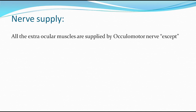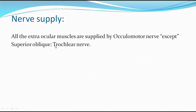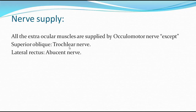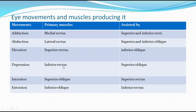All extraocular muscles are supplied by the oculomotor nerve except: SO4, LR6. SO4 means superior oblique is supplied by the fourth cranial nerve (trochlear). LR6 means lateral rectus is supplied by the sixth cranial nerve (abducent). You can use 'SO4 LR6' as your password to remember this.